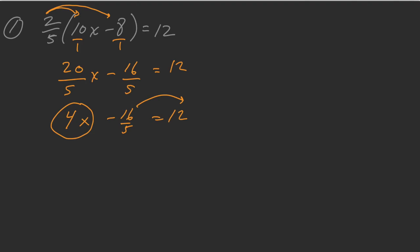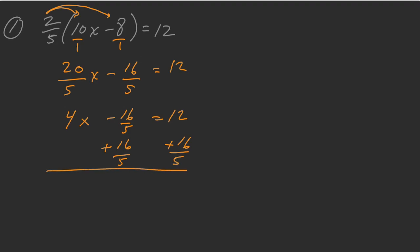What we want to do is get rid of the 16-fifths, and we're going to do that by doing the opposite. Instead of subtracting 16-fifths, let's go ahead and add 16-fifths. You can see they're going to cancel one another out because one's positive and one's negative. But over here on the right side, one of these fractions has a denominator of 5, and the other has a denominator of 1 because anything divided by 1 is itself.